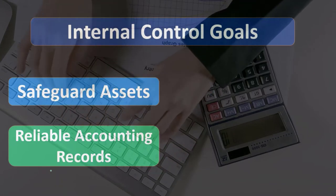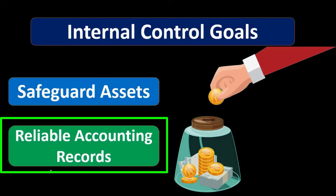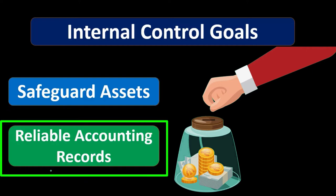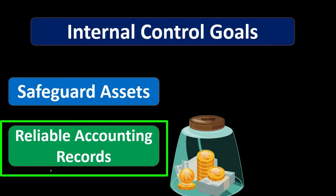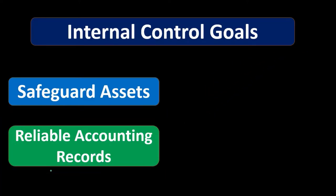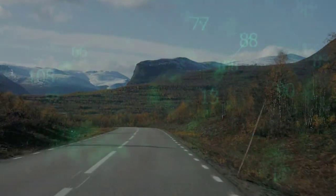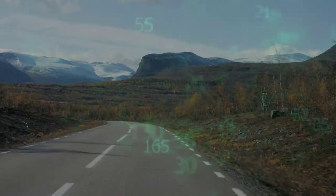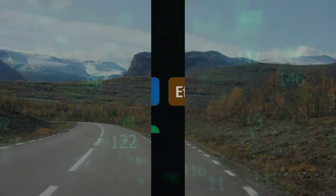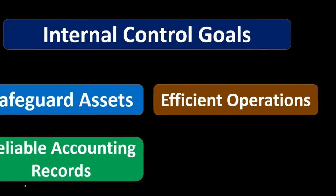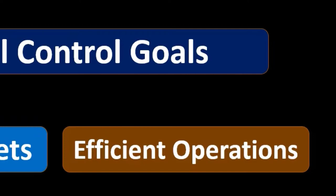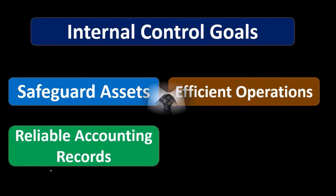We want reliable accounting records. We're going to rely on these records to see how we're doing and judge performance, so the internal controls should be set up so that accounting records are done properly. We also want efficient operations — internal controls can be set up to manage things better, get operations flowing better, and go through processes more efficiently, thereby having the business run more efficiently.